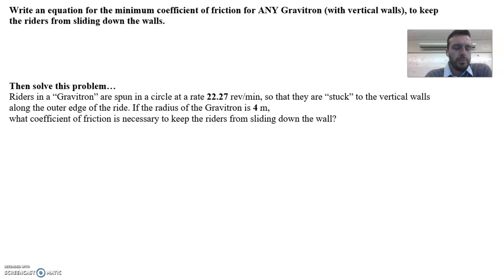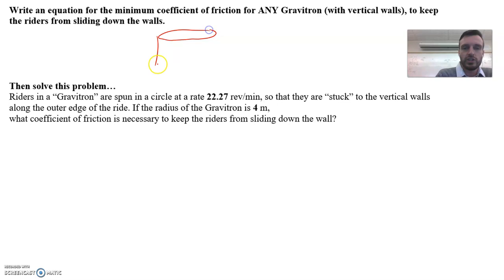Let's jump right into it. Write an equation for the minimum coefficient of friction for any gravitron with vertical walls to keep the riders from sliding down the walls. We talked about this type of ride at an amusement park before — it's basically a giant rotating cylinder, you go inside, and you stick to the walls because the whole thing is spinning around.